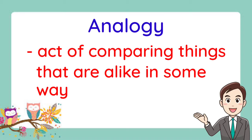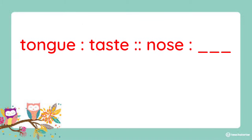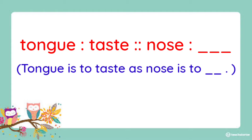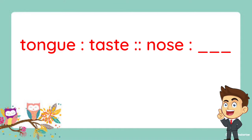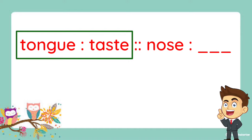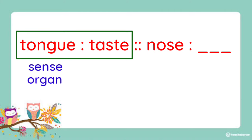Let us have an example. This is read as: Tongue is to taste as nose is to blank. For us to figure out the answer, we have to examine the first pair — tongue and taste. Now, what have you observed? It shows the sense organ and its use or function.